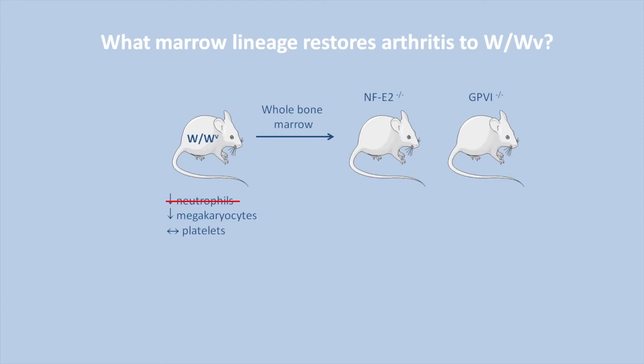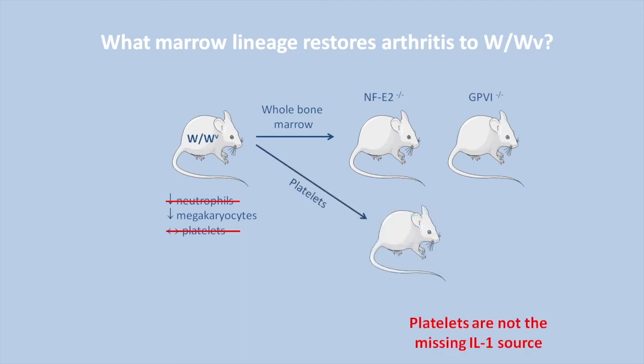We expected that platelets would be the culprit, since they can release IL-1-containing microparticles. Surprisingly, however, WWV platelets were normal both in number and in production of IL-1 microparticles. Further, transfer of wild-type platelets failed to restore arthritis; thus platelets do not appear to be the missing IL-1 source either.